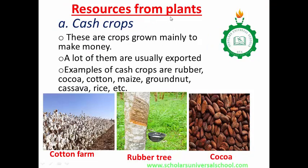Now let's move on to resources from plants. The first resources you can get from plants are cash crops. These are crops grown mainly to make money. Most of them are usually exported — for example, cocoa is exported out of the country and can be used to produce chocolate. Examples of cash crops are rubber, cotton, maize, groundnut, cassava, rice, etc. They are sold for money.